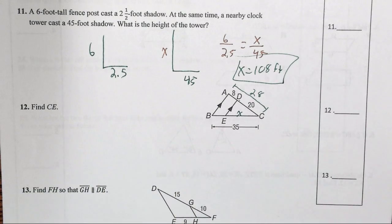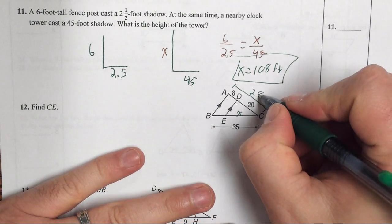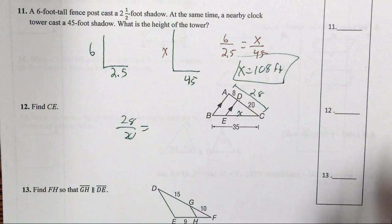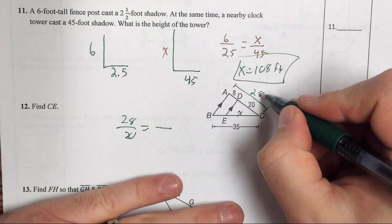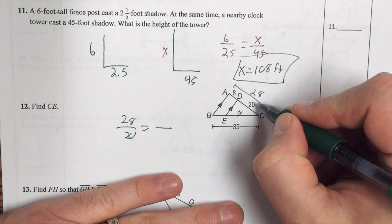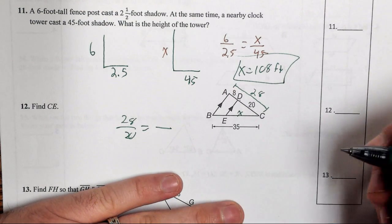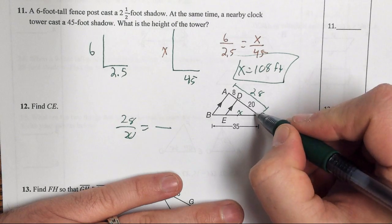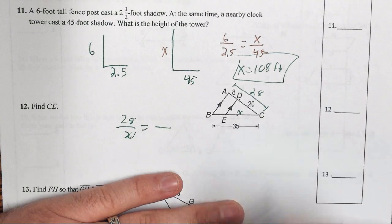So what I can do is make a proportion, 28 over 20 equals. Now we've got to be careful with this next one, because if we're just kind of going straight down, say 28 over 20 equals X over 35, but that doesn't work because we're doing big triangle over small triangle, so we have to begin to do big triangle over small triangle.